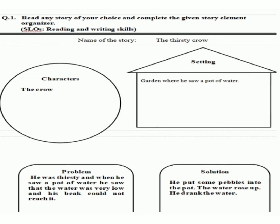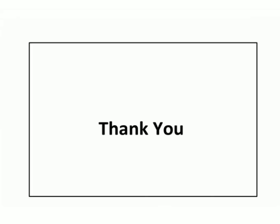Our next element is problem. Problem is basically the point on the basis of which we write the whole story. In this story, the problem was that the crow was thirsty, and when he saw a pot of water, the water in that pot was very low to reach his beak. Our last element is solution — we give an idea to resolve the problem. In this story, the solution is: he put some pebbles into the pot and the water rose up, and he drank that water. Students, I hope you will get some help from this story. You will keep this concept and story in your mind, then write a story of your own interest and fill in this question. Thank you.